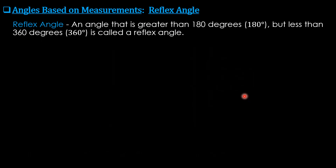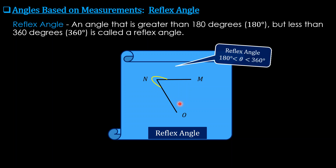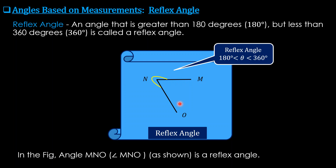A reflex angle is an angle that is greater than 180 degrees but less than 360 degrees. In this figure, the angle shown is a reflex angle named angle MNO — as shown in the diagram. Note that angle MNO could also refer to the acute angle on the other side, which is less than 90 degrees, but here we are referring to the reflex angle as shown.